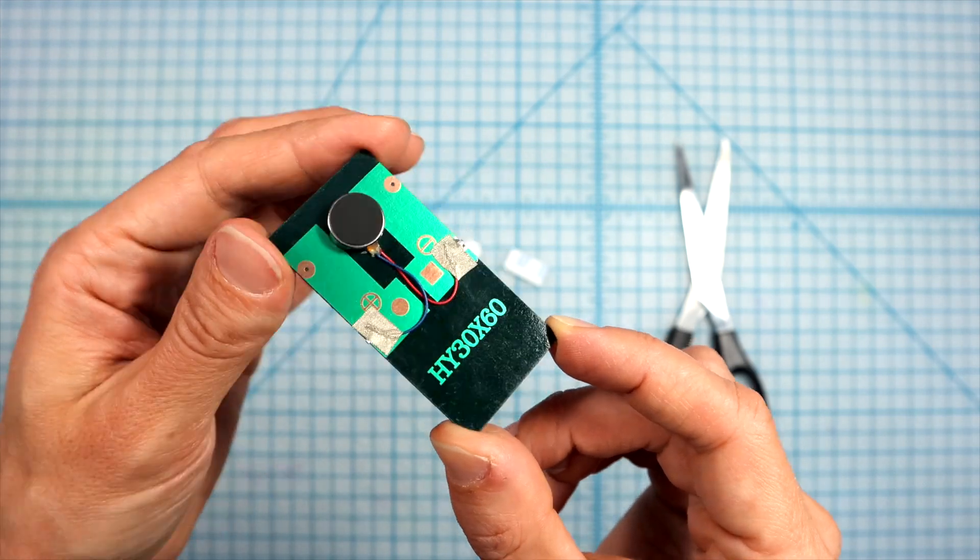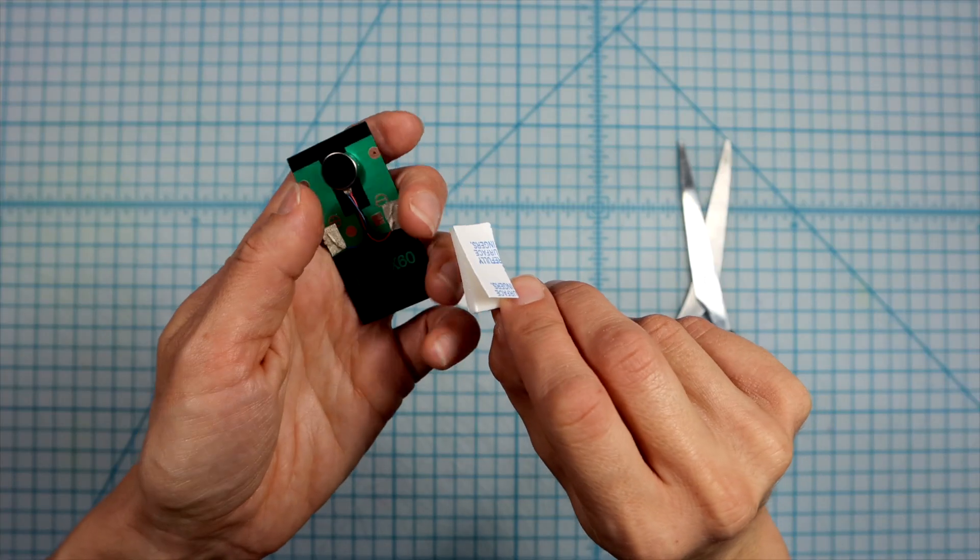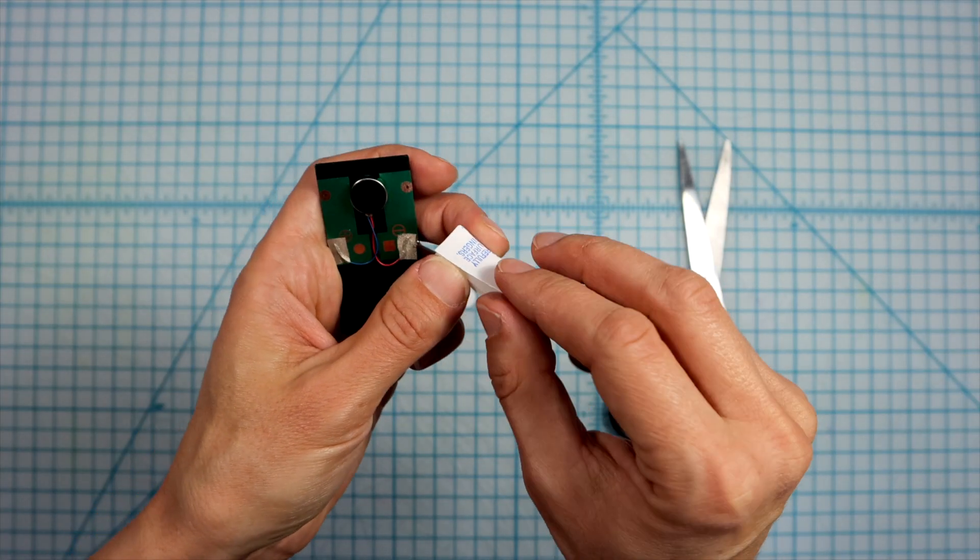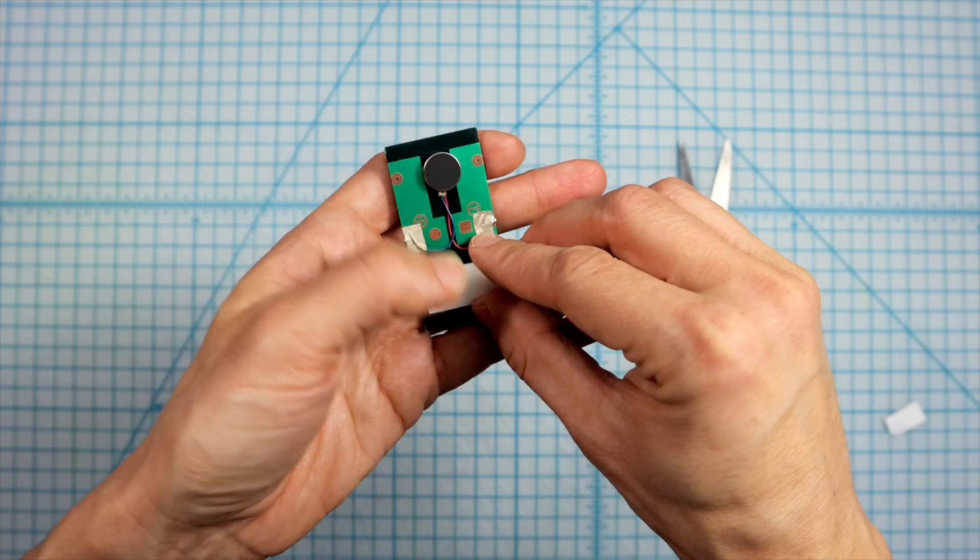To prepare your bot base for the next step, remove the paper backing from one side of the foam tape and stick it over the model number.